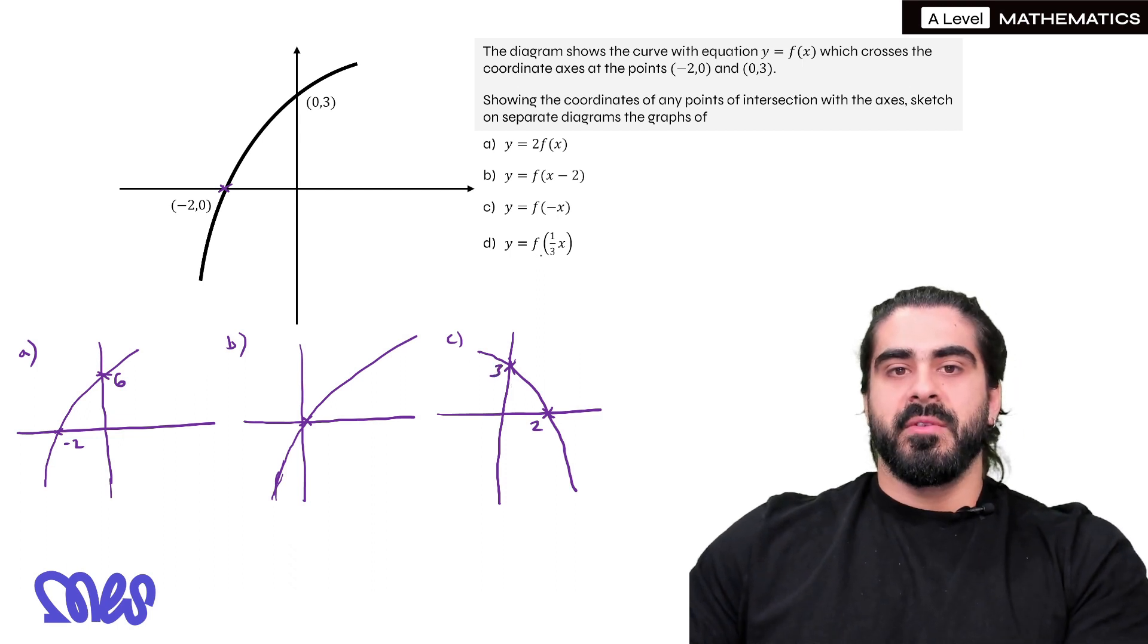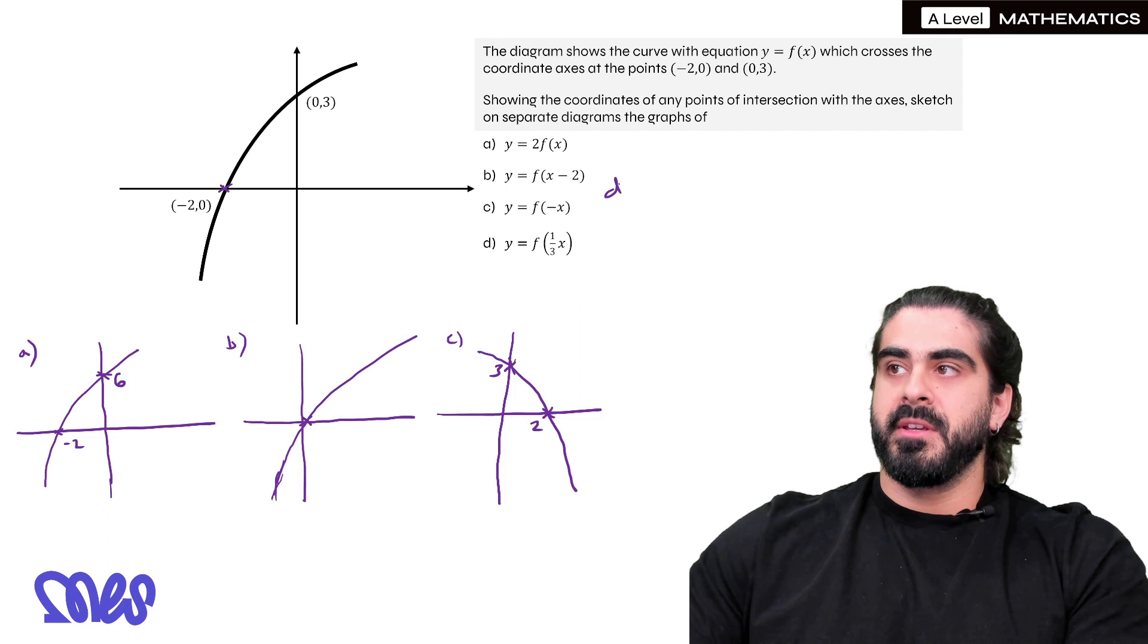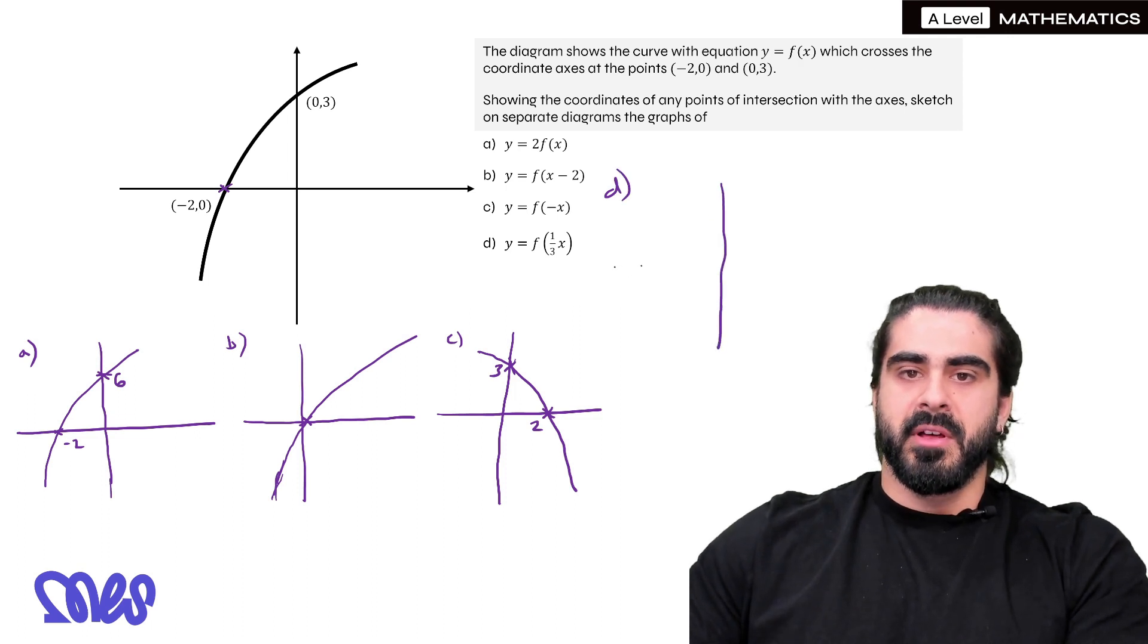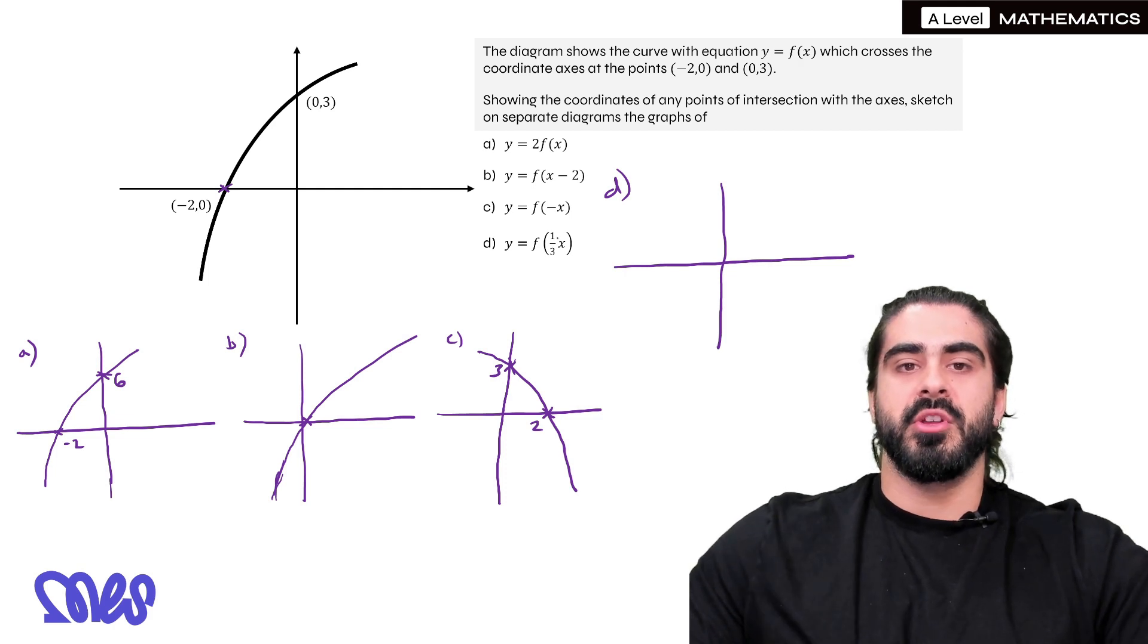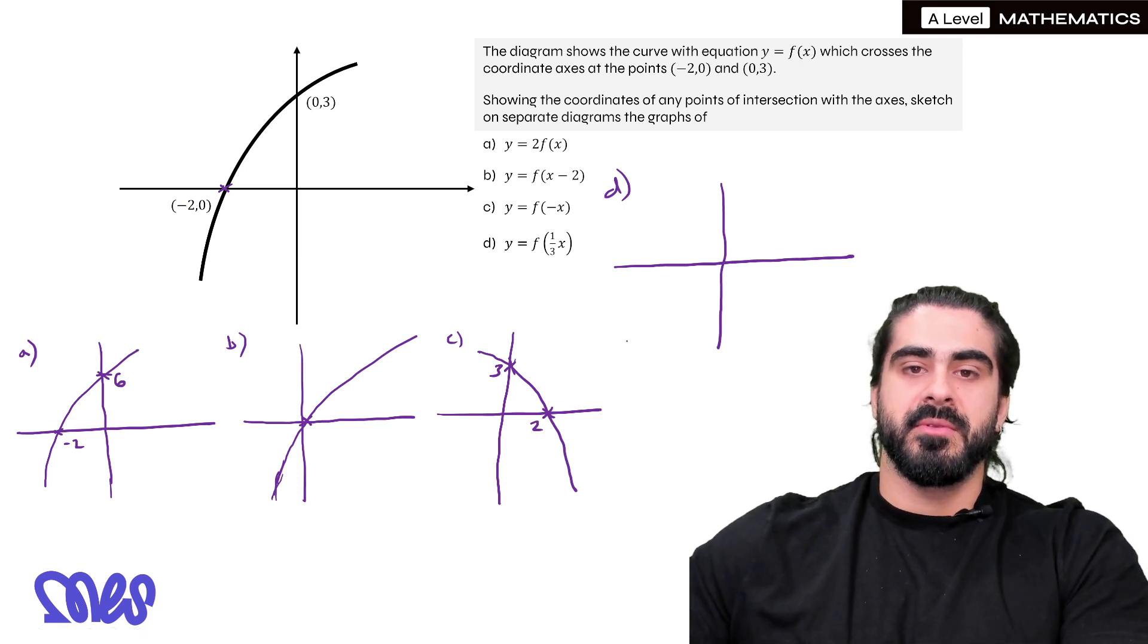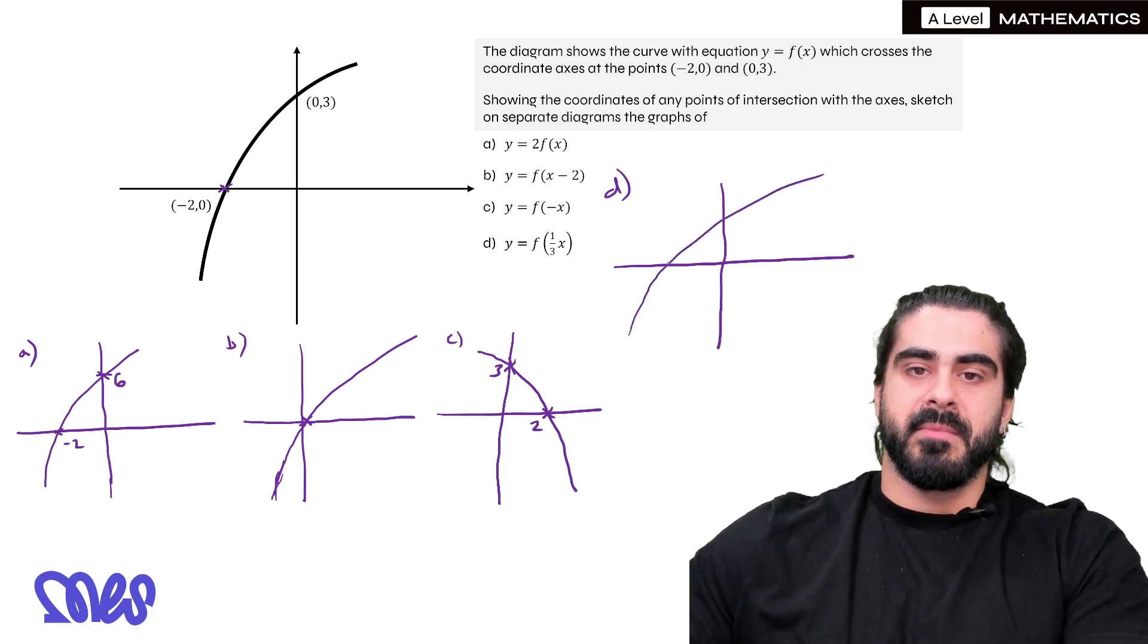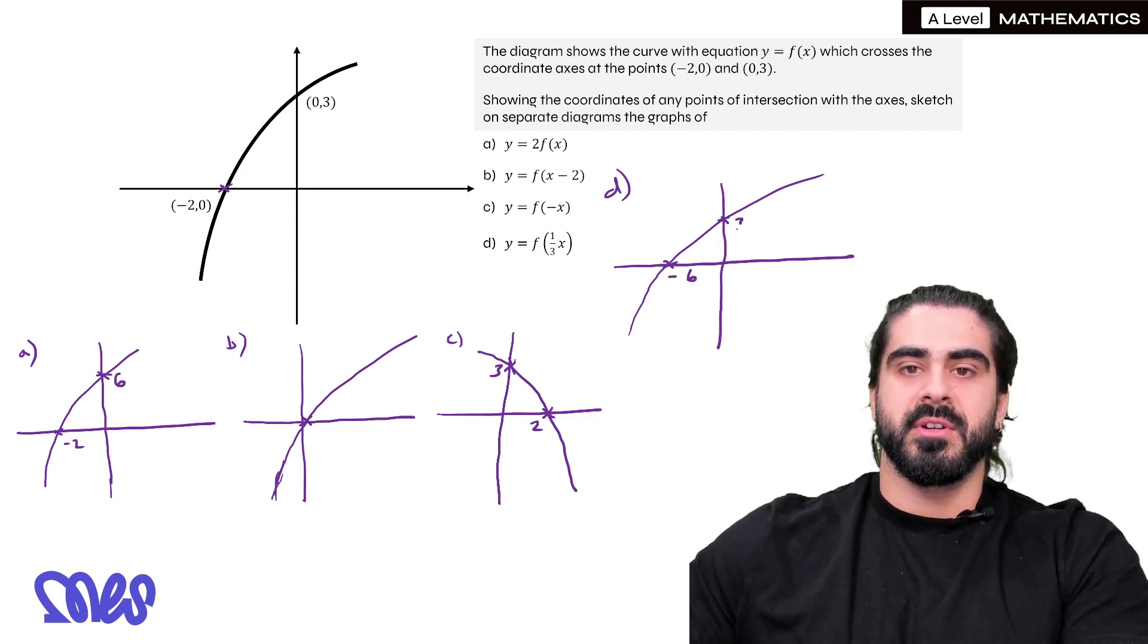The last one is f(⅓x). Do that up here. Now remember, a third essentially means you're dividing a value by 3. But we know we're doing the opposite. We're timesing all the x values by 3. So the only thing that gets affected is (-2,0). Instead of minus 2, it's going to be minus 6. And the y intersection is still going to be 3.